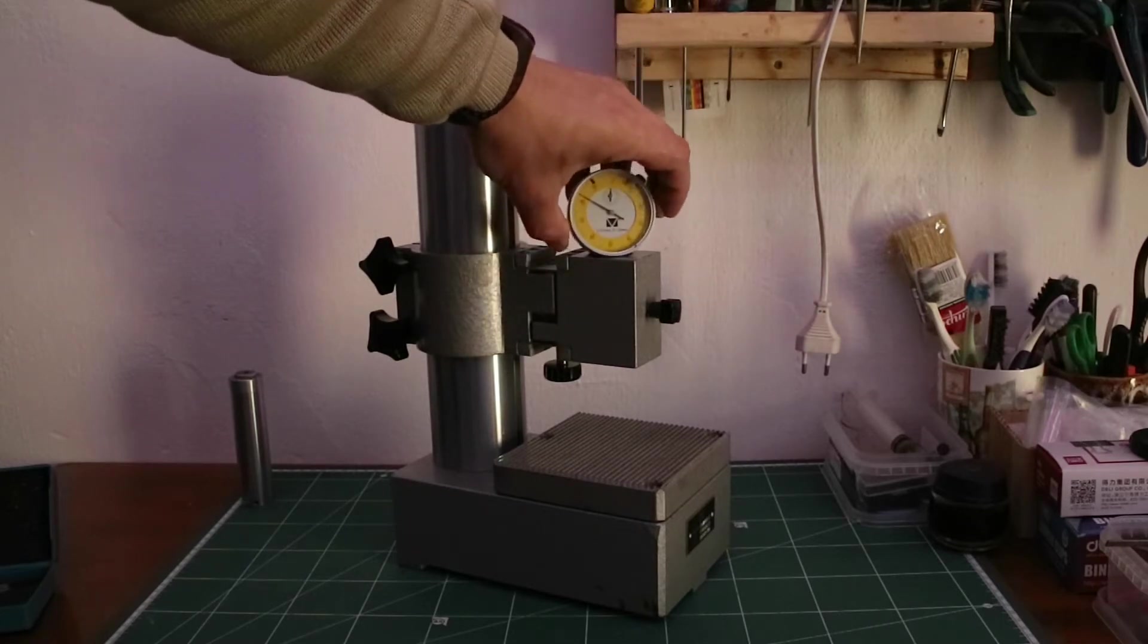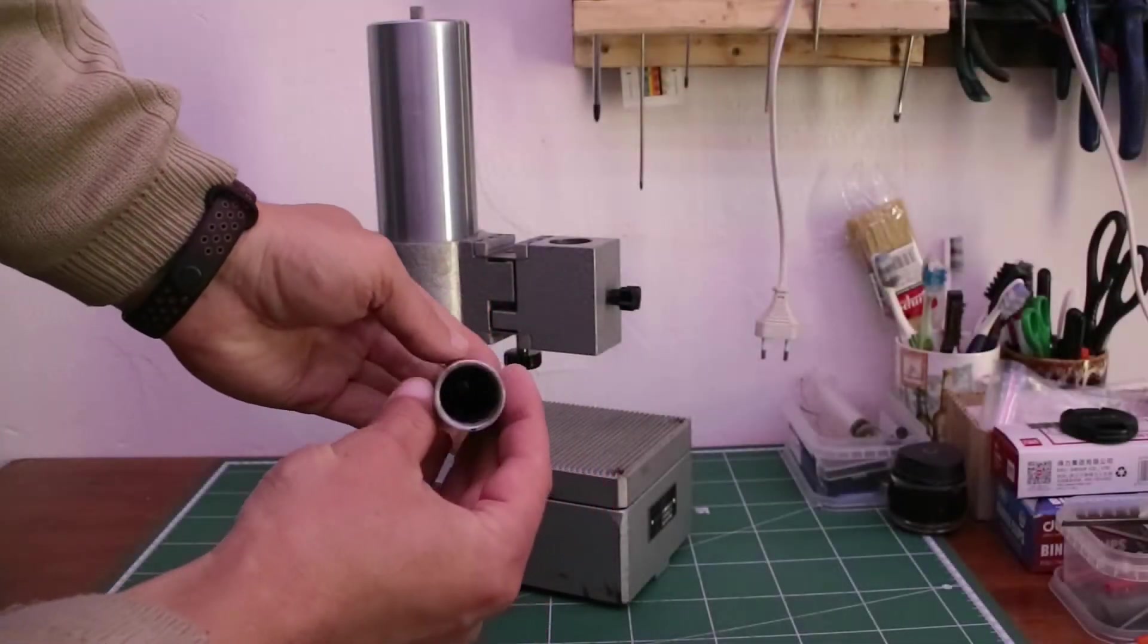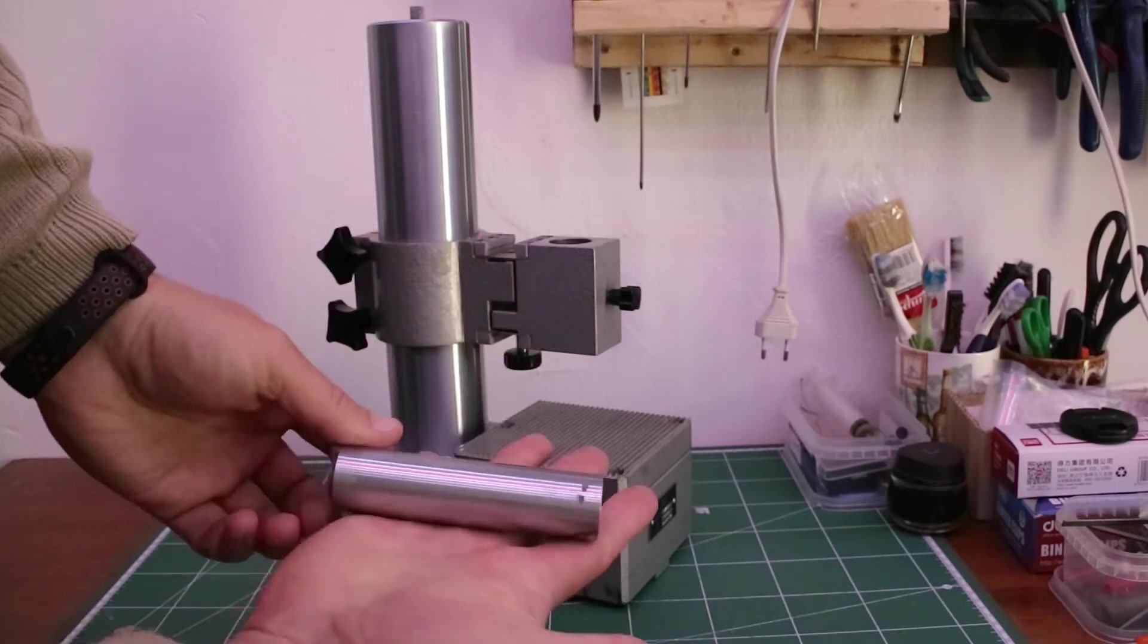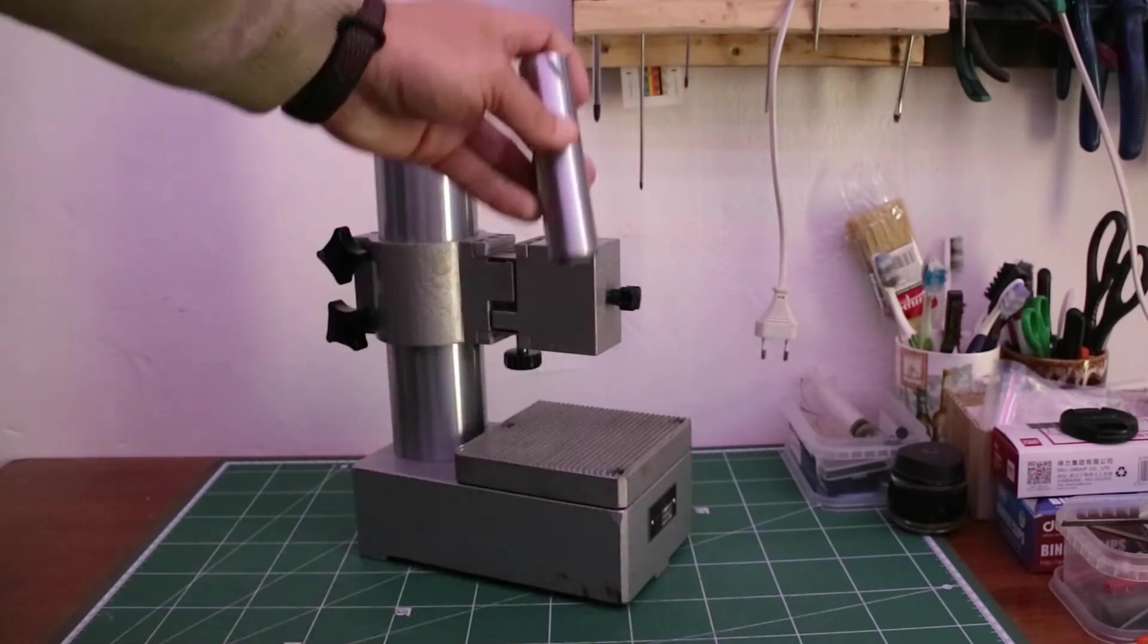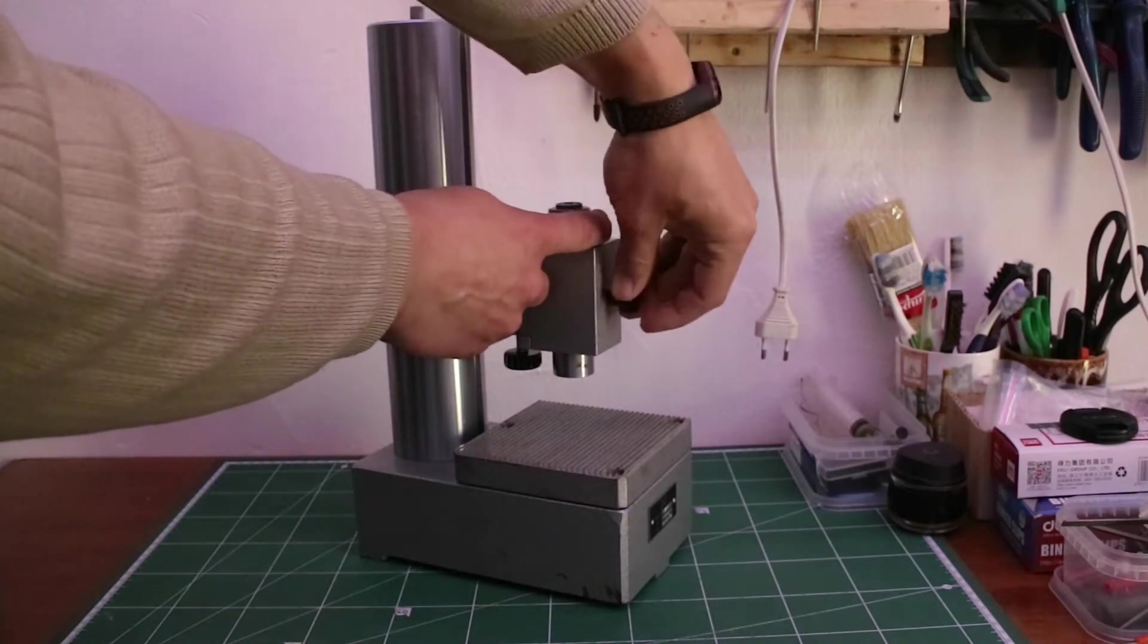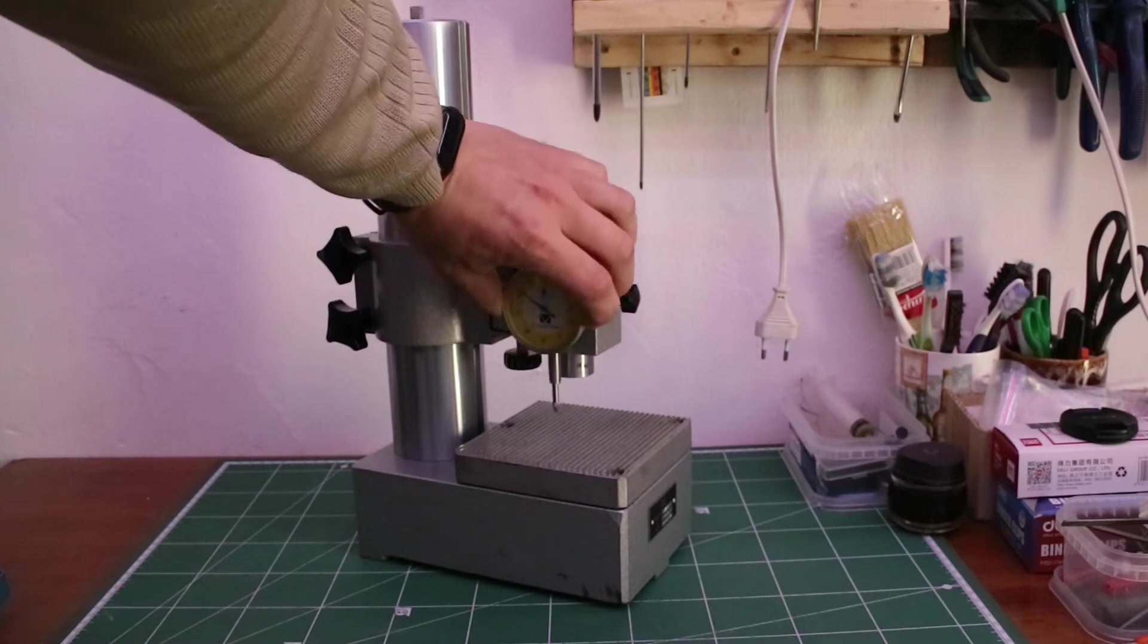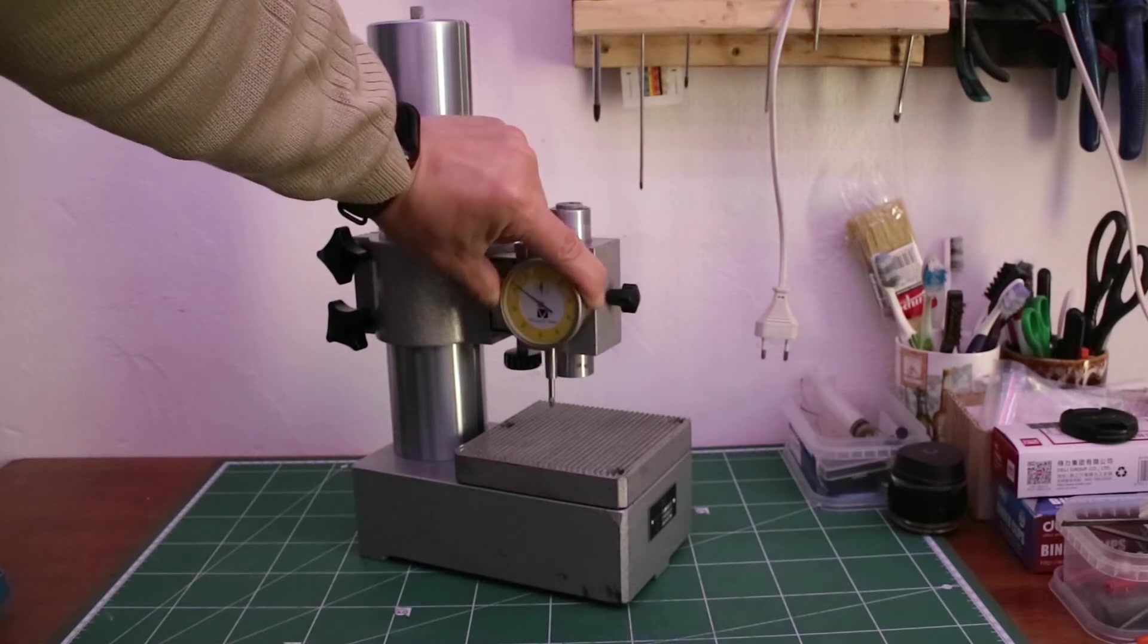As you can see there is no way to attach this indicator here. I looked up the internet and found a not working microcater for 2 bucks, disassembled it and got this tube.